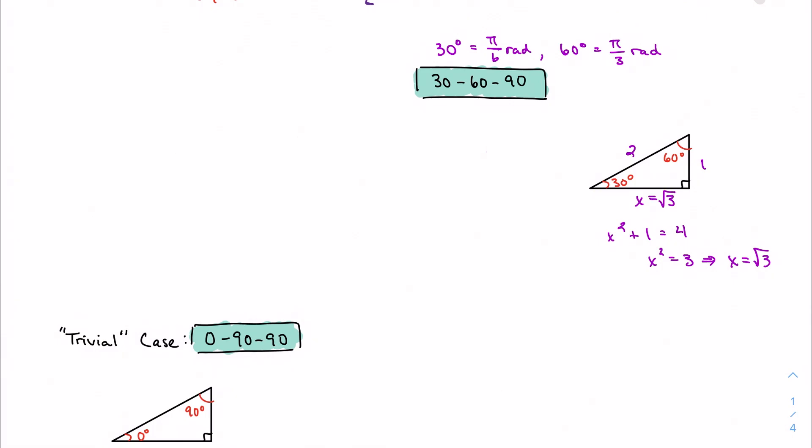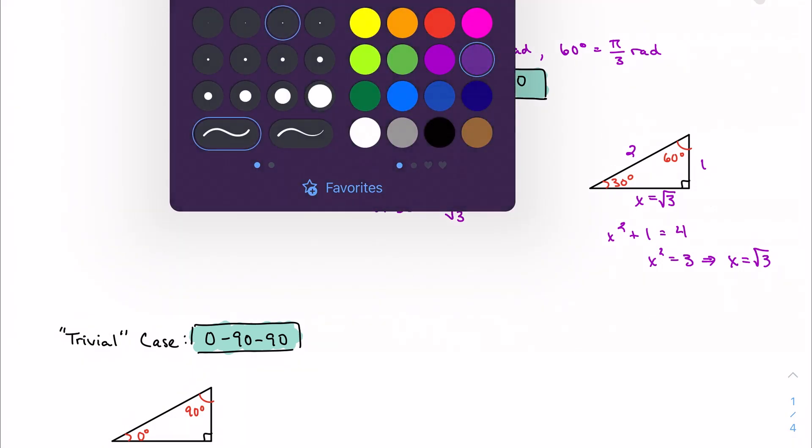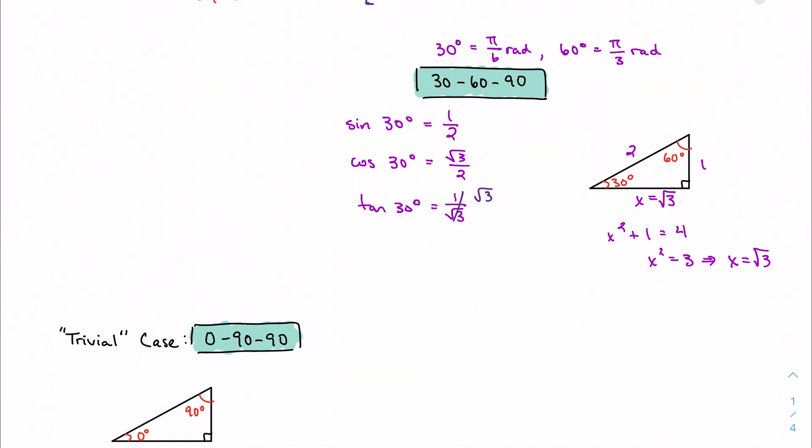I can go through and do all my trig functions again. So sine of 30 is opposite over hypotenuse, so one half. Cosine of 30 is adjacent over hypotenuse, so I get root 3 over 2. Tangent 30 is opposite over adjacent, so I get 1 over root 3, which we're going to make that easier on ourself and rationalize it to root 3 over 3.